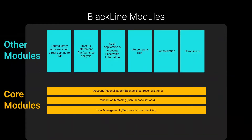Blackline offers a set of software modules, and with each module your accounting tasks become more and more automated. Today's demonstration will just be on the task management module, which is commonly used to automate month-end close checklists. Some of the other modules do things like automate balance sheet reconciliations, automate bank reconciliations, and provide controls and approval processes around journal entries. If you want to learn more about these other modules, feel free to reach out and we'll be happy to walk you through them. Let's jump into the task management module.